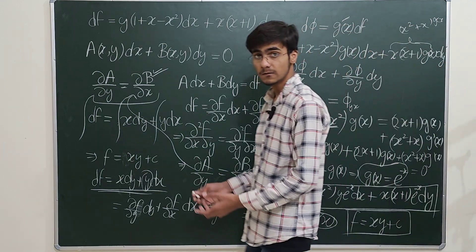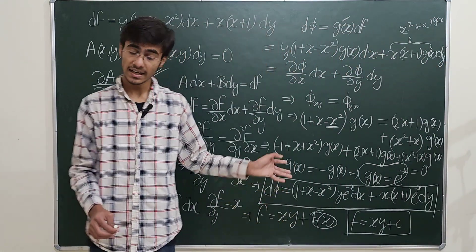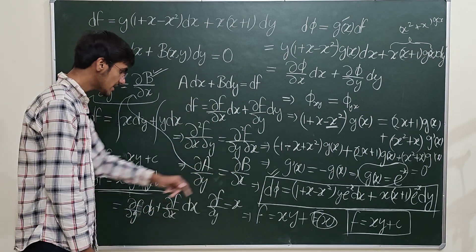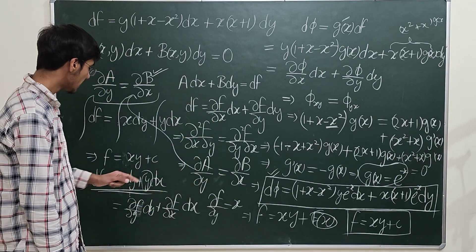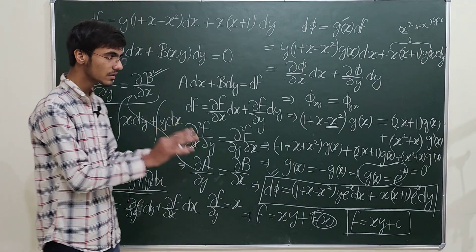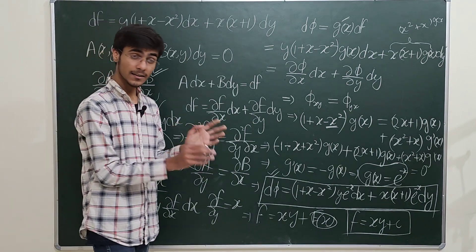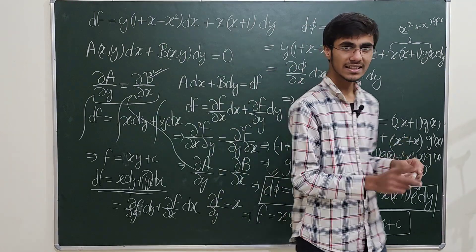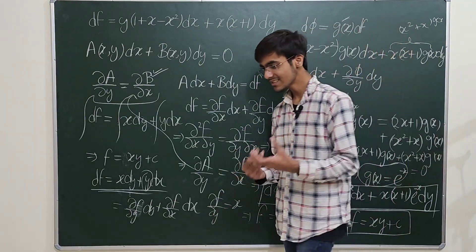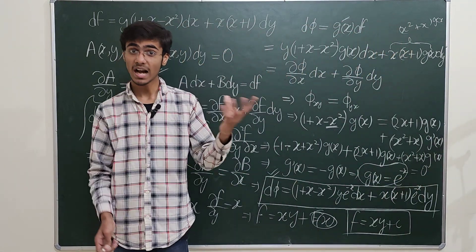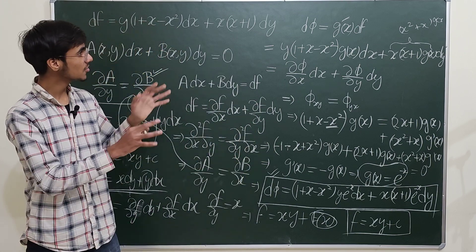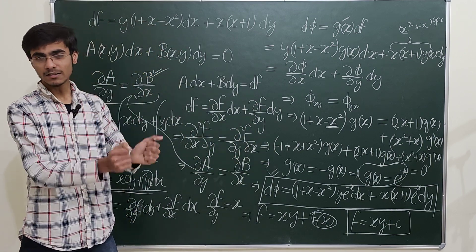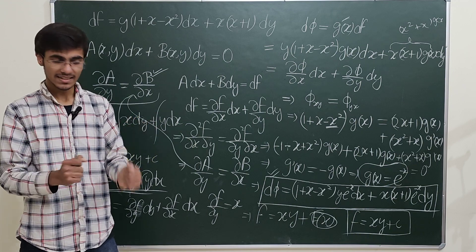We found the integrating factor e^(−x) using this method. Multiplying it in gives an exact differential dΦ, and from there you can find the function Φ using the partial integration procedure described. This is the motivation behind finding integrating factors.